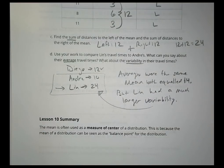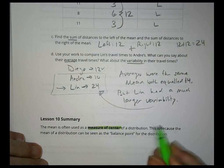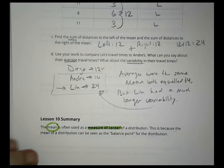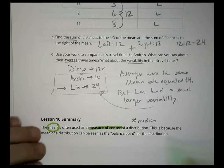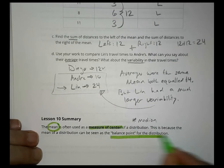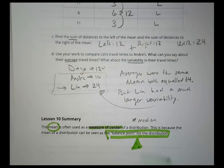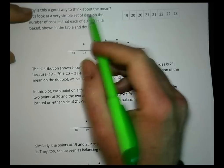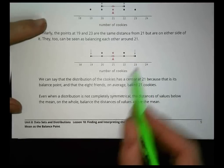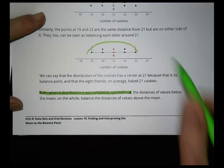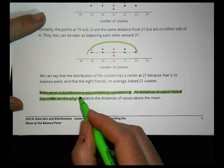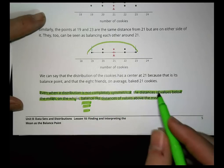In summary, the mean is often used as a measure of center. We call it the measure of center because it's the balance point for the distribution — where everything is equal and balanced in terms of distances. Even when a distribution is not completely symmetrical, the distances of values below the mean on the whole balance the distances of values above the mean.